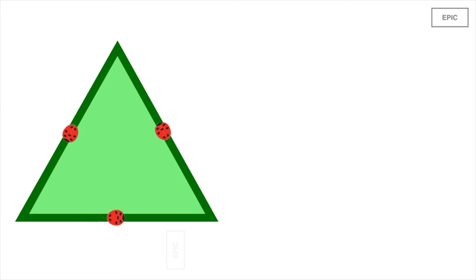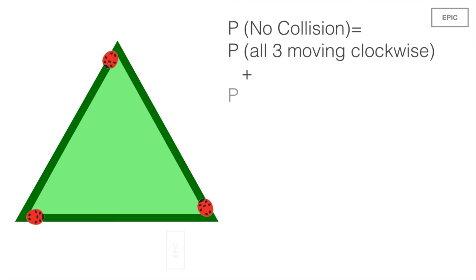The answer is, to avoid collision, all three bugs together have to either move in clockwise or anti-clockwise direction. So, probability of no collision is the sum of probabilities of bugs moving in either clockwise or anti-clockwise direction.